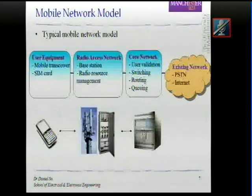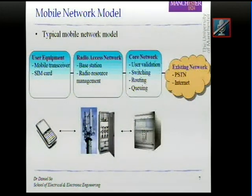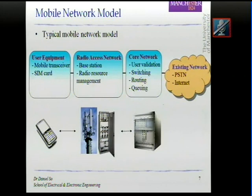That is a typical wireless communication transceiver block diagram. If we look at the bigger picture — the mobile network — it can be divided into mainly three parts. We have the user equipment, or UE, which is the mobile transceiver including the SIM card — essentially your portable device. Connecting to the UE is the radio access network. In 3G, the base station equipment is called Node B, and in LTE it is called eNode B. The radio access network performs radio resource management, since spectrum is expensive and scarce.